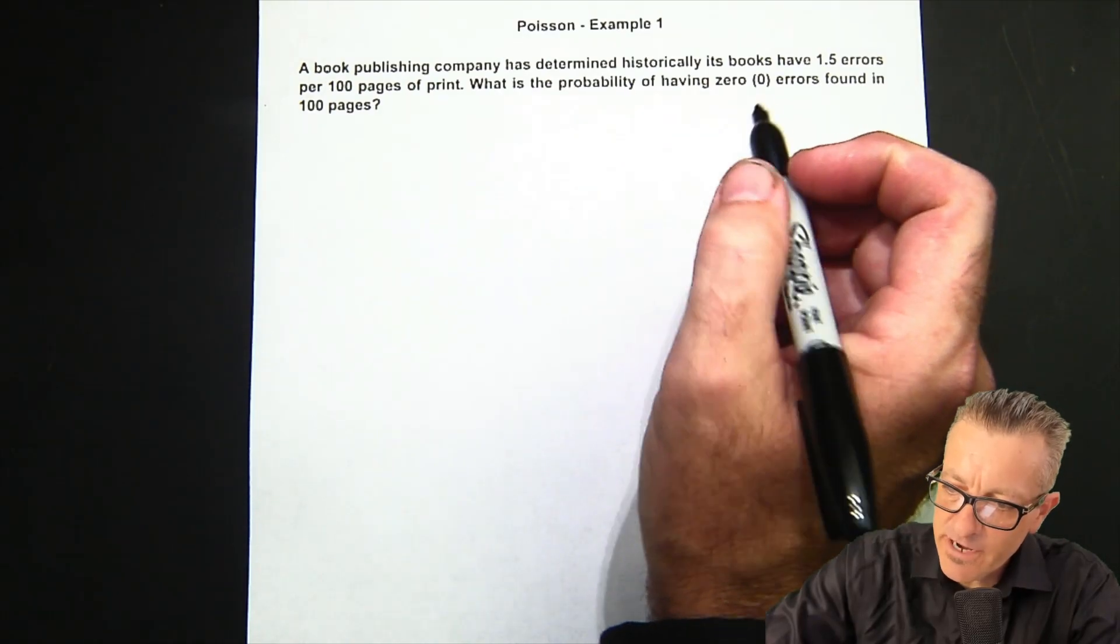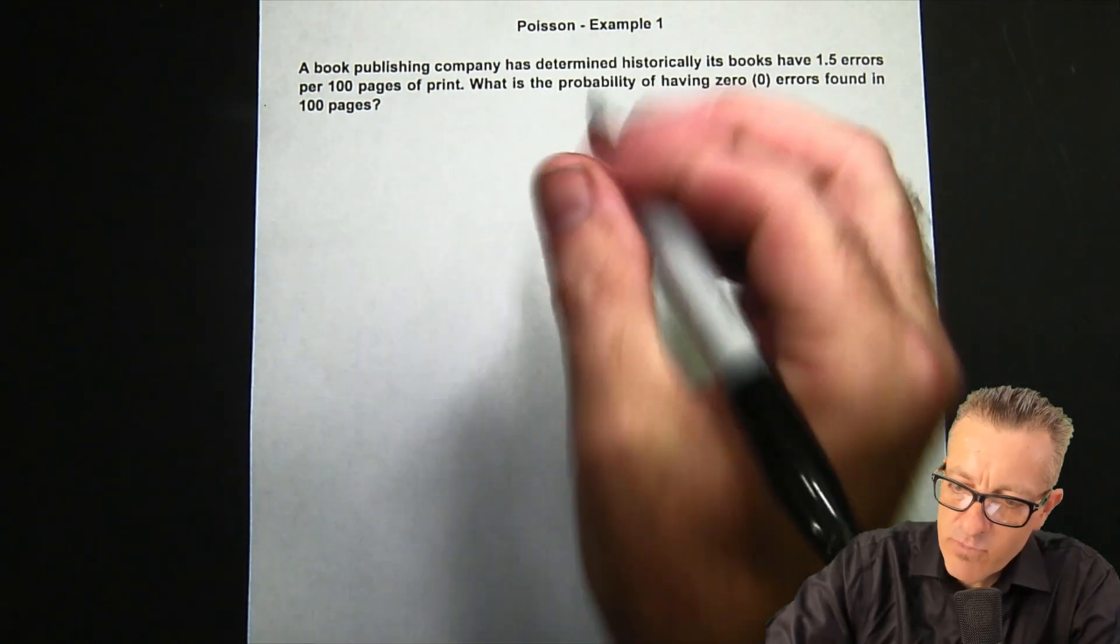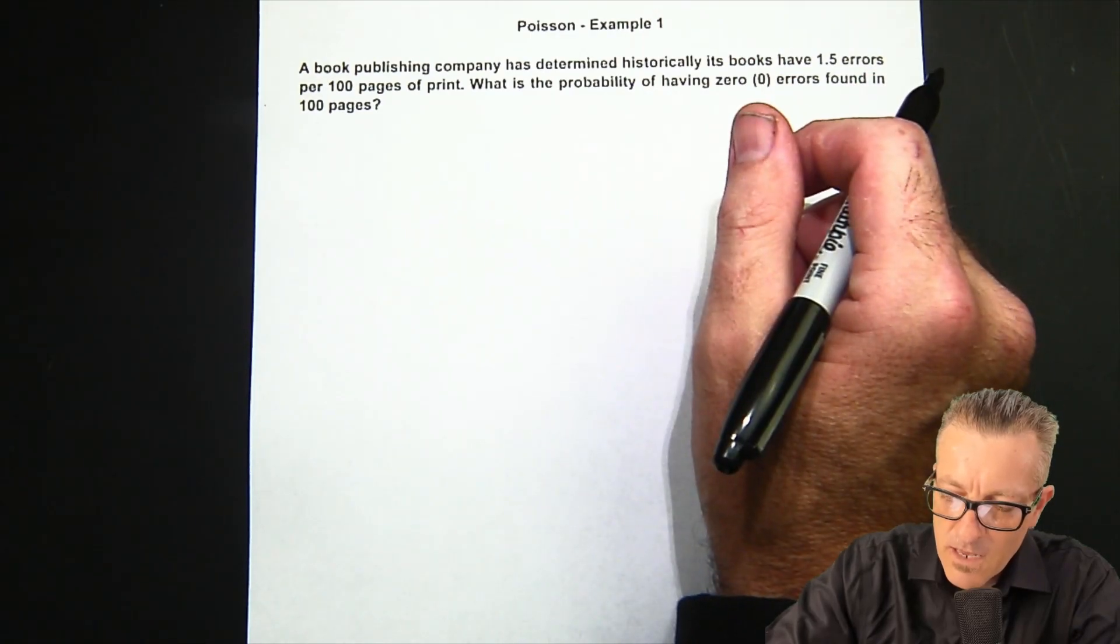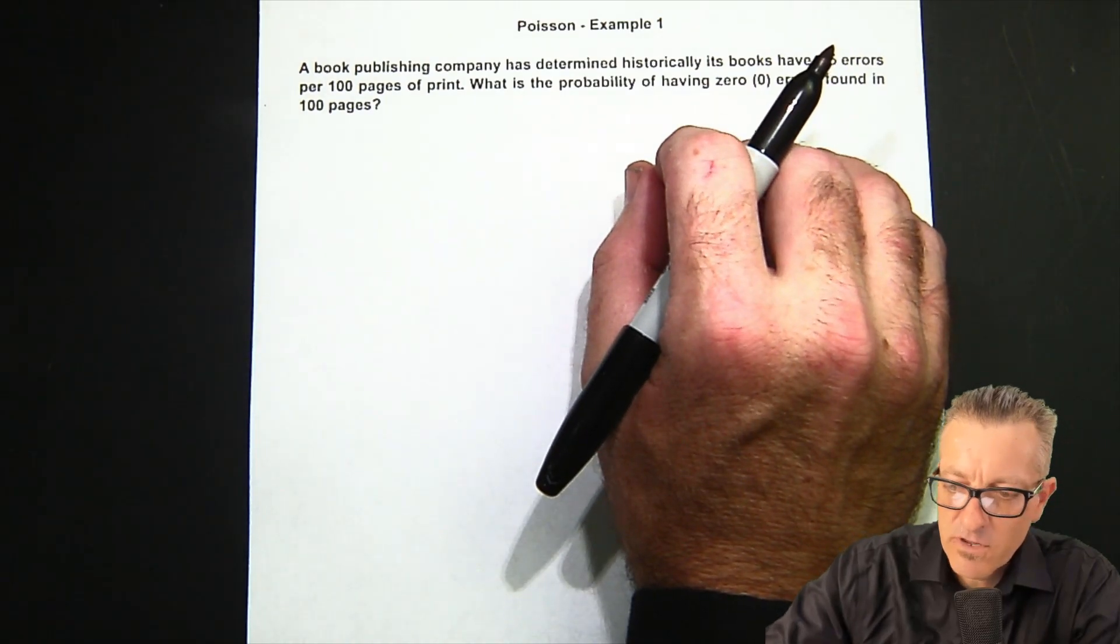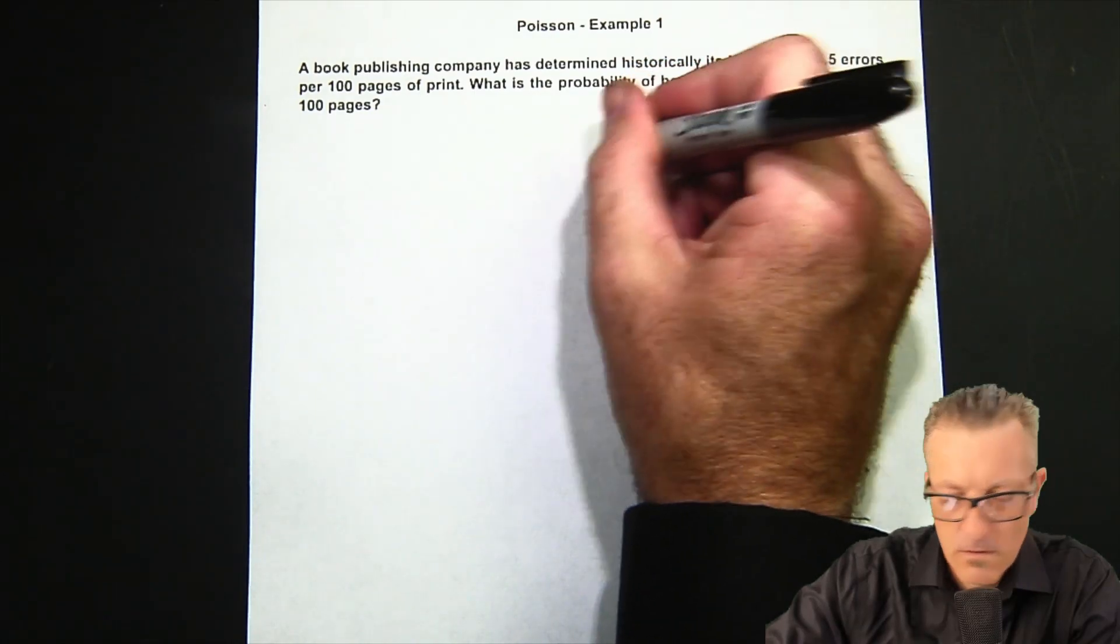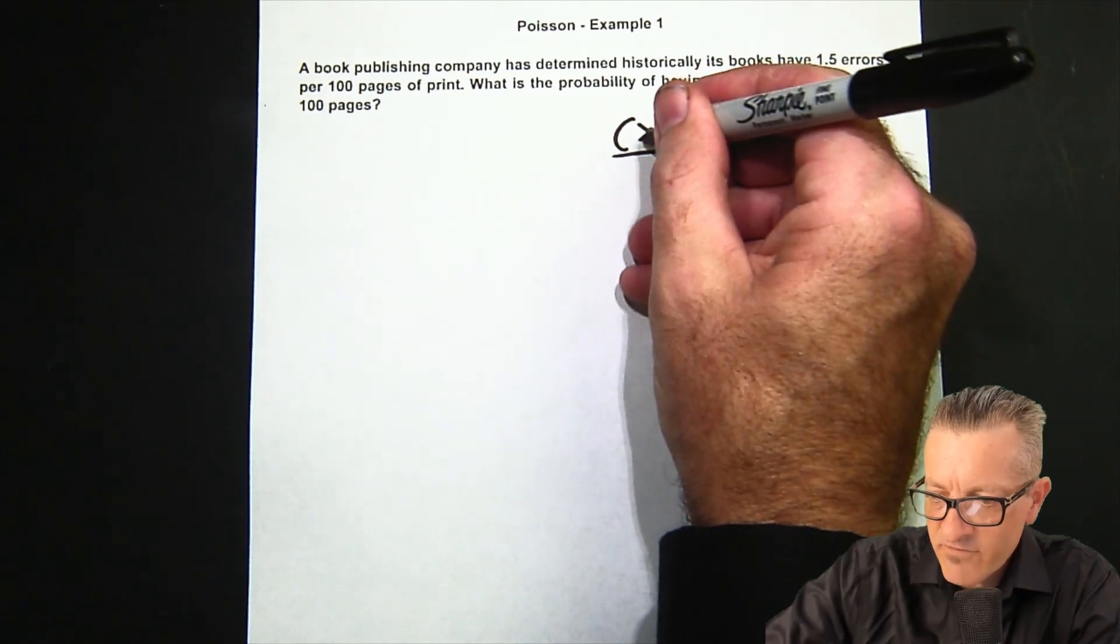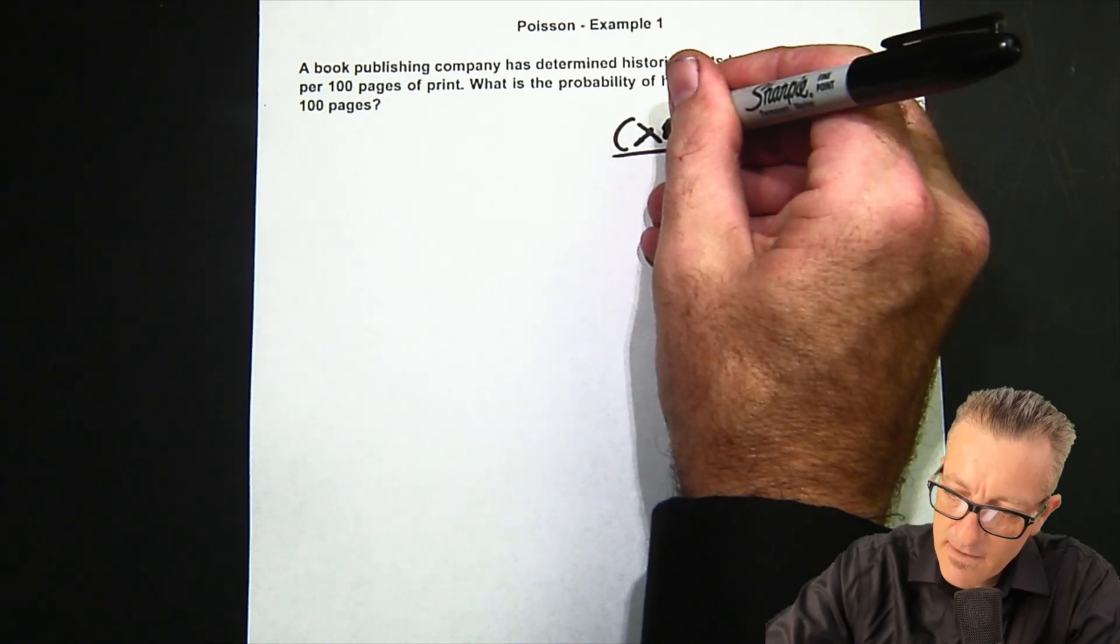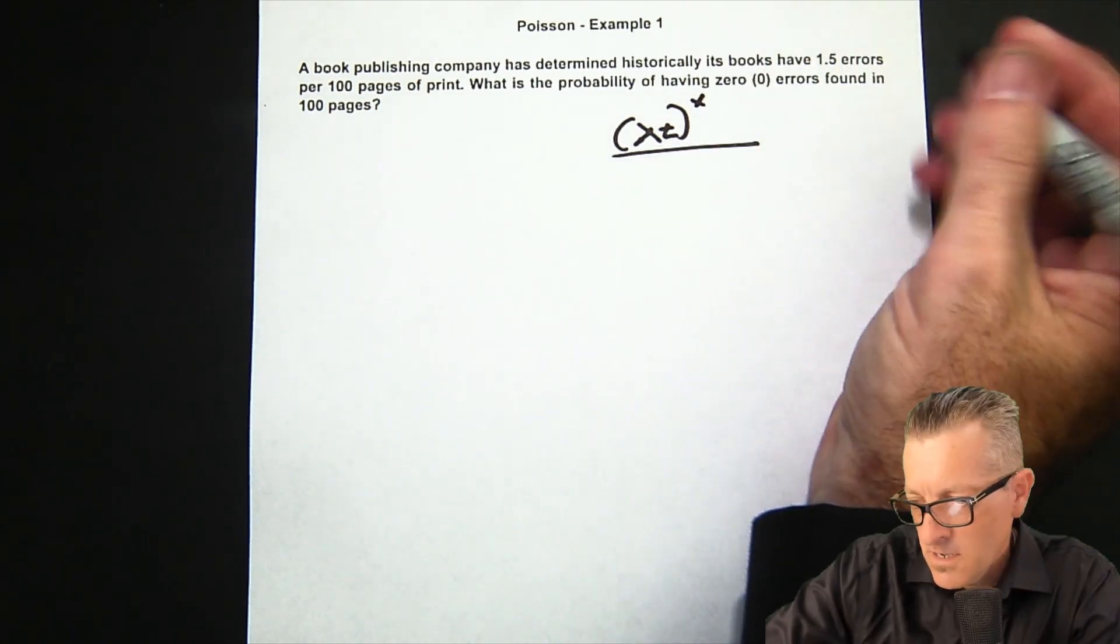Okay, so this is a Poisson distribution probability problem. The way that a Poisson formula is usually written is like this: we have lambda, and lambda is essentially what our average expected is, multiplied by the time T, and then X which is what we're looking for.